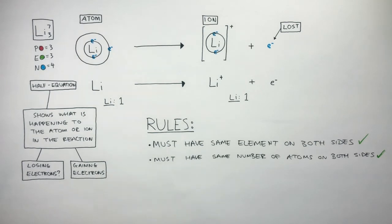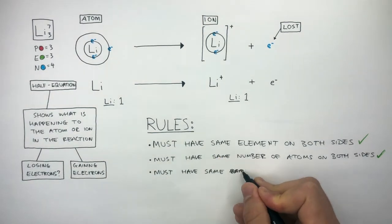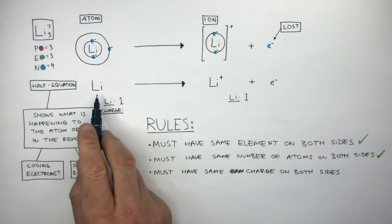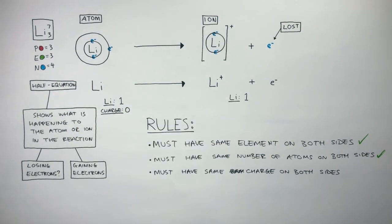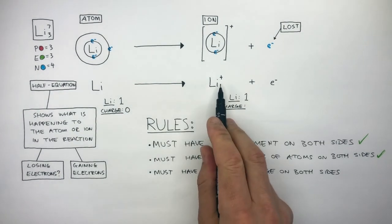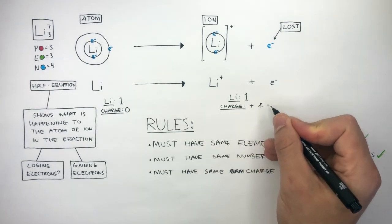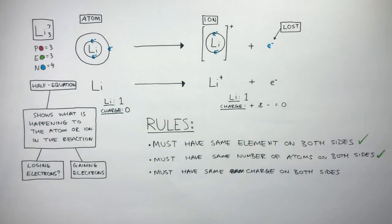The final rule: the half equation must have the same charge on both sides. To check the charge, we write 'charge' on each side. The charge of a lithium atom is zero — atoms always have a neutral charge. The charge of a lithium cation is plus one, and the charge of one electron is one minus. So one plus and one minus equals zero. The overall charge on the right is zero, so this is balanced.